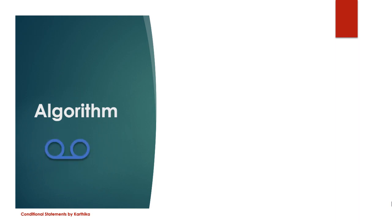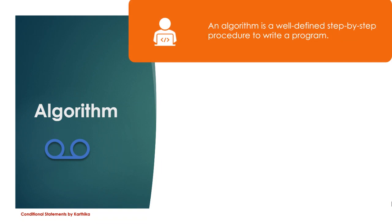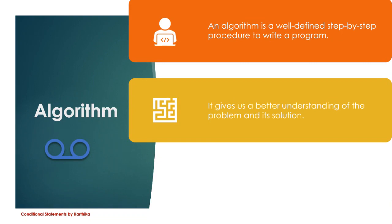Next we are going to learn about algorithm. An algorithm is nothing but a step-by-step procedure used to write a program. As a programmer, when given a problem like preparing a game, you have to analyze your problem — how to start, where to start, what things you need, what things to get from the user. After analyzing, you write all these procedures step-by-step, and that is called an algorithm. By writing the algorithm we get a better understanding of the problem and its solution.